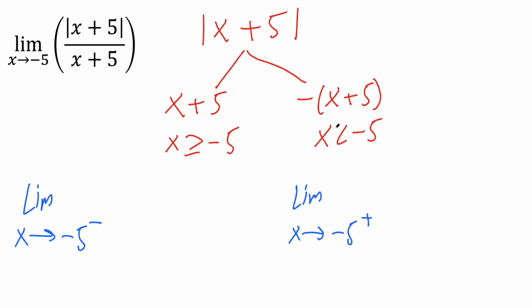So to the left of negative 5 would behave like this. So we could do negative parentheses x plus 5 divided by our x plus 5. Likewise, to the right of negative 5 would behave like this. So we could do our x plus 5 divided by x plus 5.